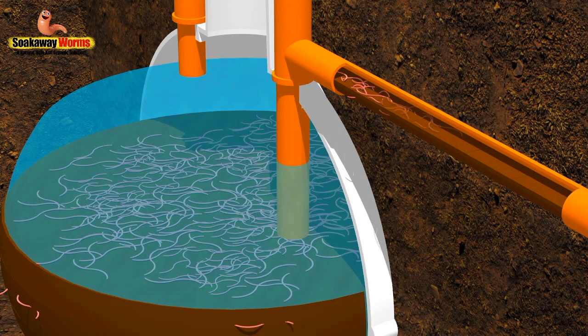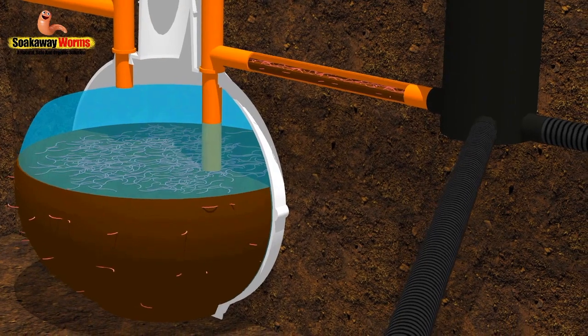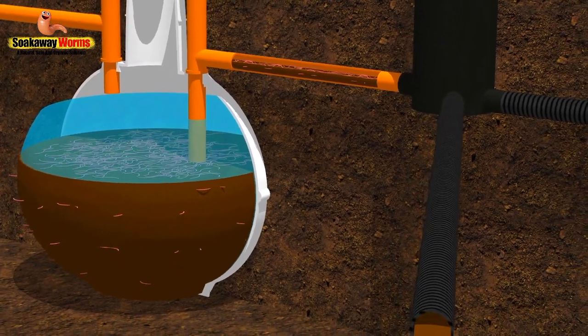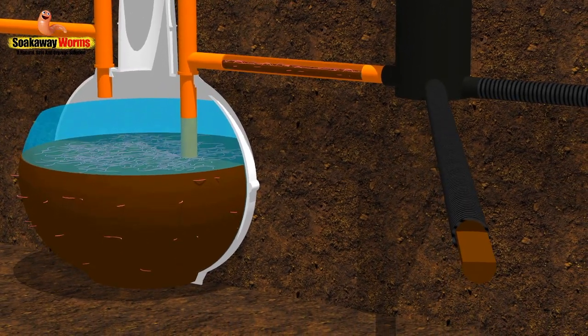From there, these worms will make their way deep into the main arteries of the soak away, reaching into all the nooks and the crannies and the areas that rodding and jetting just cannot get to.